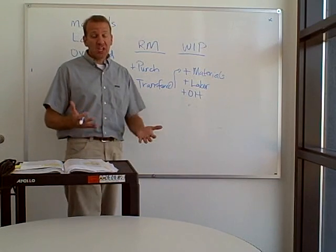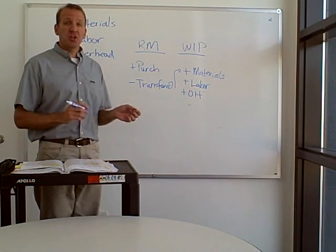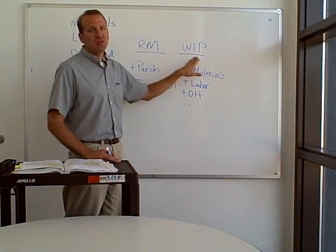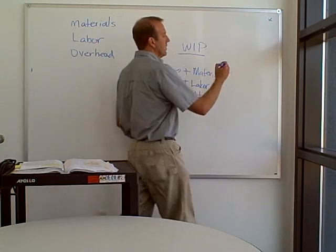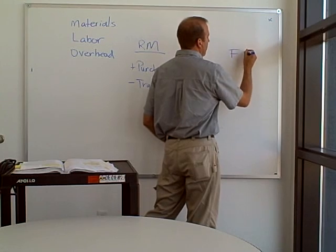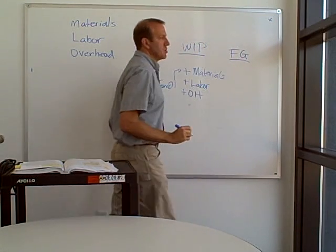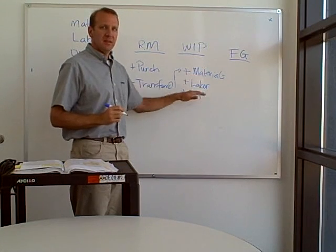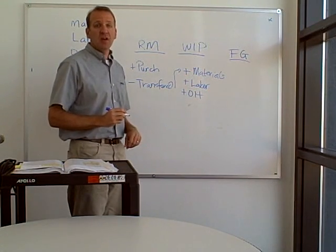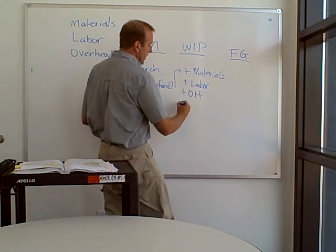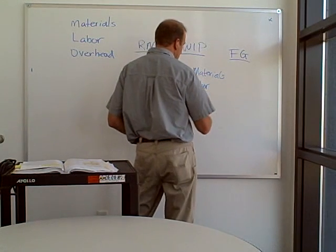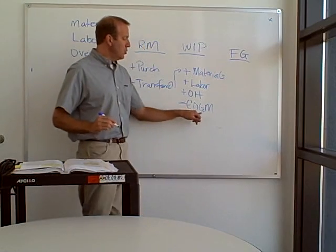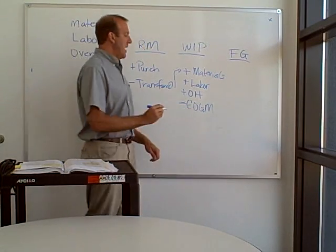At some point the chairs are going to be finished, and when that happens they can't stay in work in process anymore — they have to go to finished goods, abbreviated FG. The term we use for the costs that are finished is cost of goods manufactured, or COGM. So we subtract out the cost of goods manufactured from work in process and transfer it to finished goods.